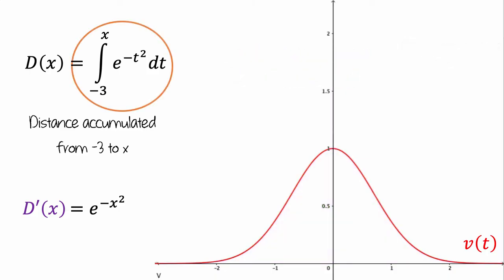Let's think about what a graph of the accumulation function would look like. For each value of x, the value of the accumulation function, graphed in black, tells us the amount of distance we've accumulated between time zero and time x.